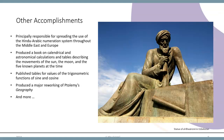In addition to major contributions founding algebra, Al-Khwarizmi was also principally responsible for spreading the use of the Hindu-Arabic numeration system throughout the Middle East and Europe. He also contributed to calendrical and astronomical calculations and produced tables describing the movements of the sun, the moon, and the five known planets at the time. He published tables of values for the trigonometric functions sine and cosine, and produced a major reworking of Ptolemy's geography, plus much more. The statue pictured is in his honor in Uzbekistan.